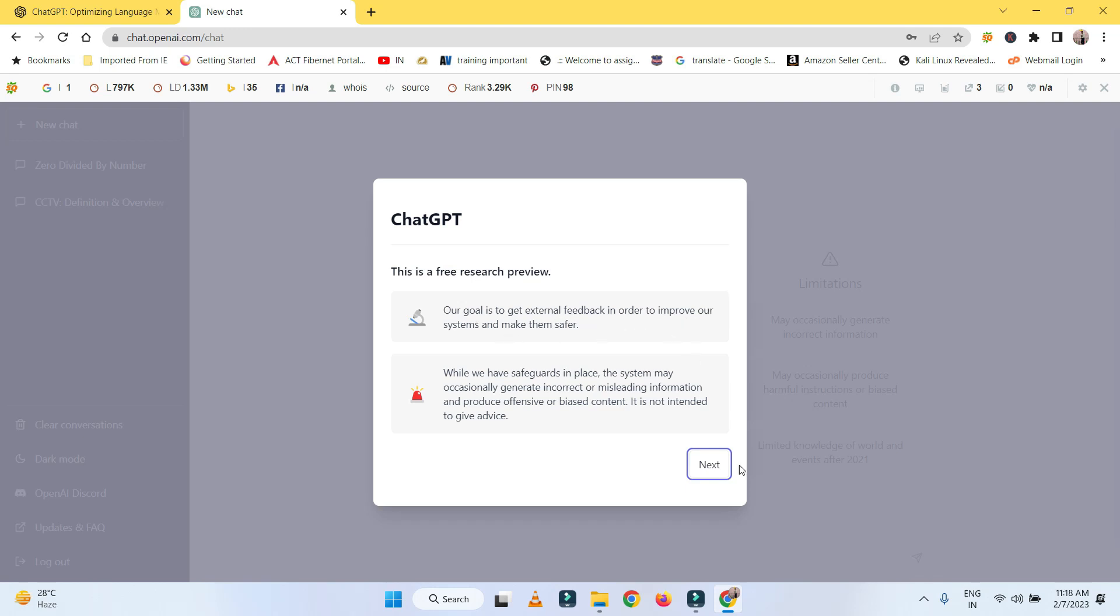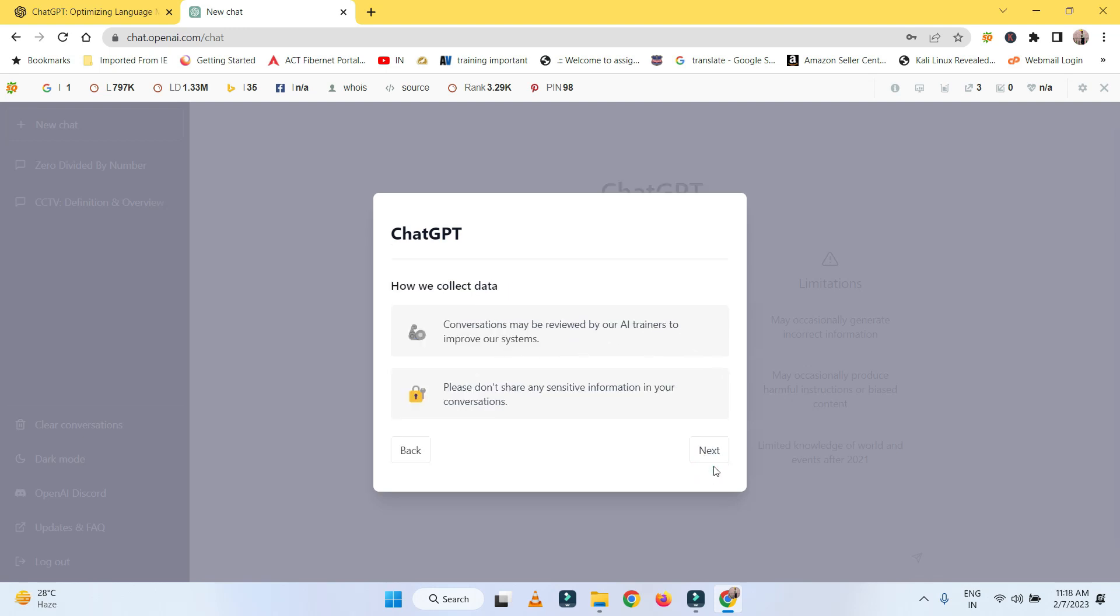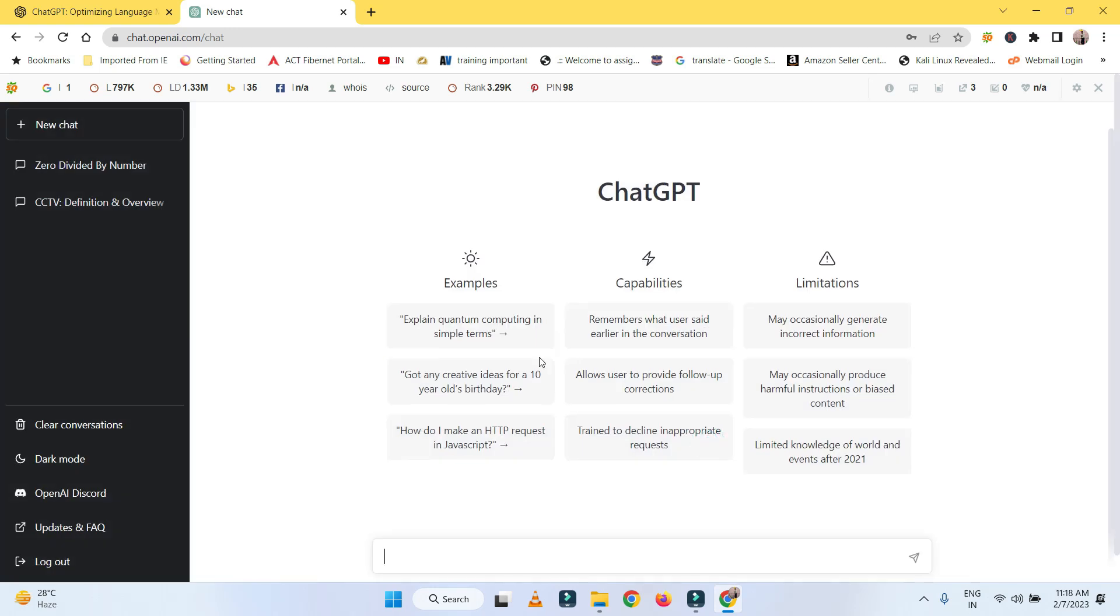Once I type in the mobile phone and those things, it will pop up this window: 'This is a free research provider.' How we collect data—you can see all those things. These things will be popped up once you type in. Now you can see the examples, capabilities, and limitations of this project.